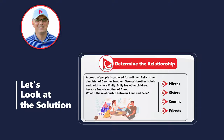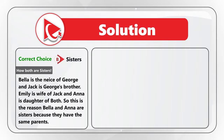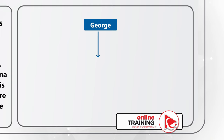The correct answer is choice B — they are sisters. Let's build a diagram to demonstrate the relationships between this group of people. Let's start with the statement that George has a brother, and George's brother is Jack.